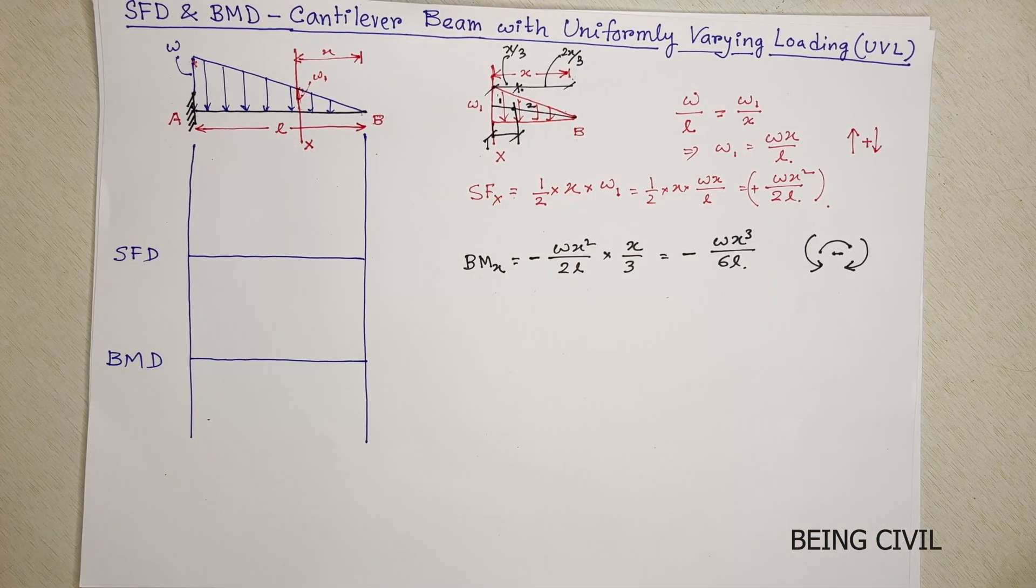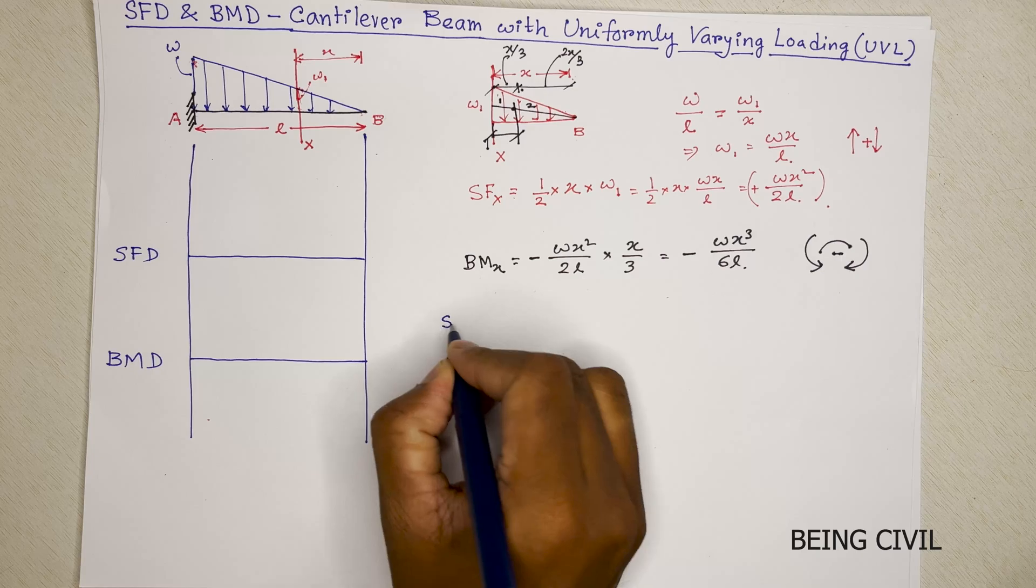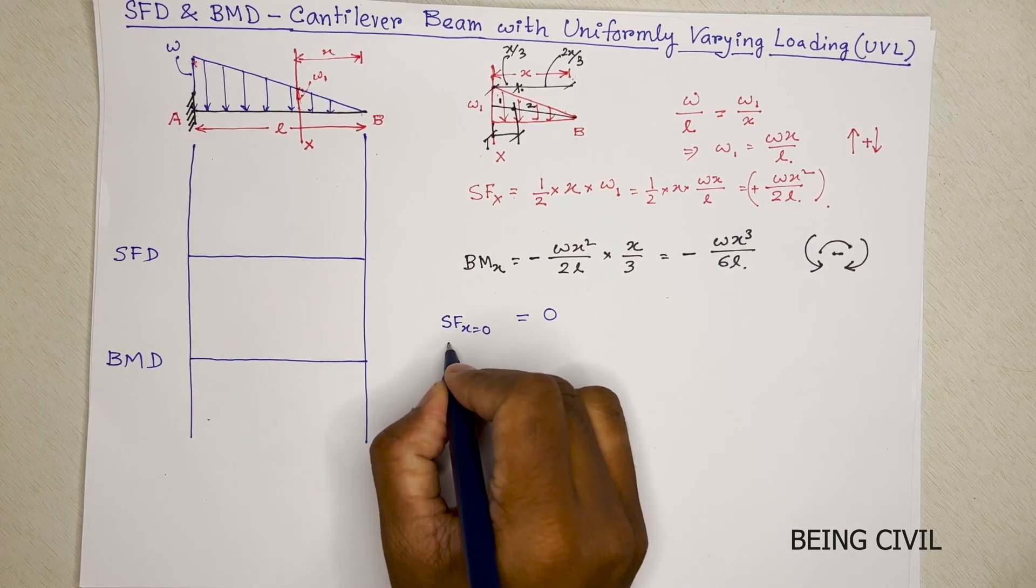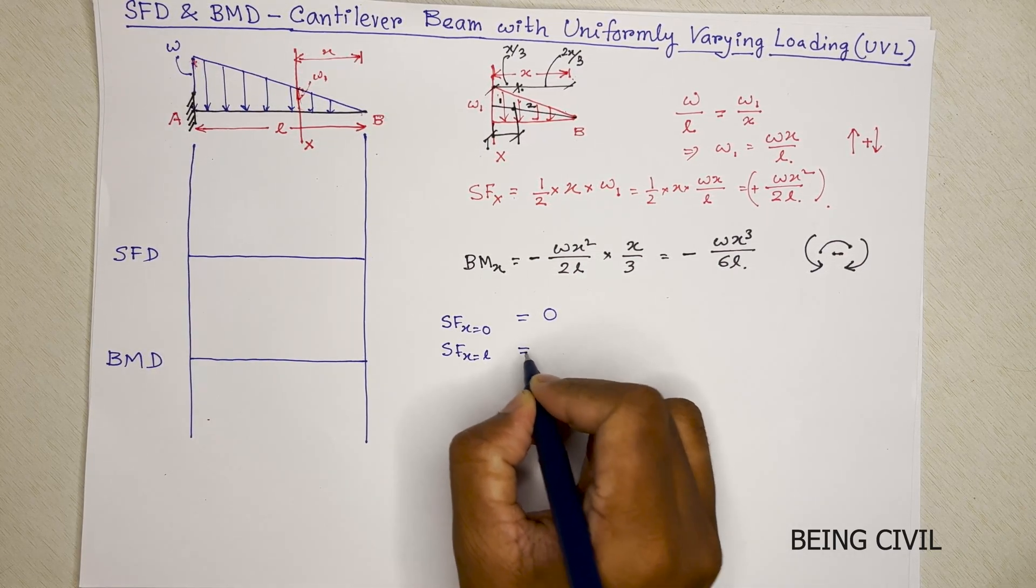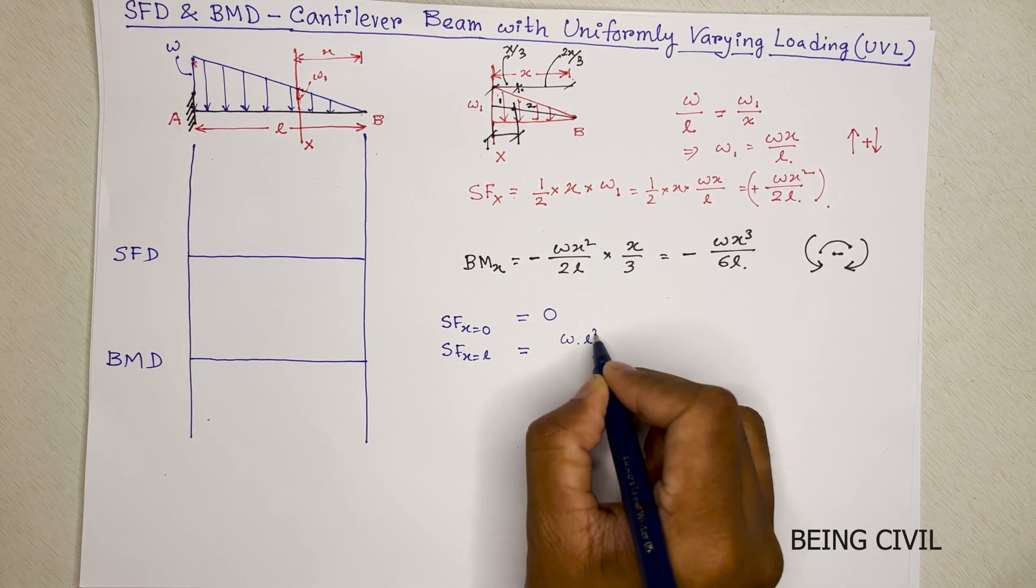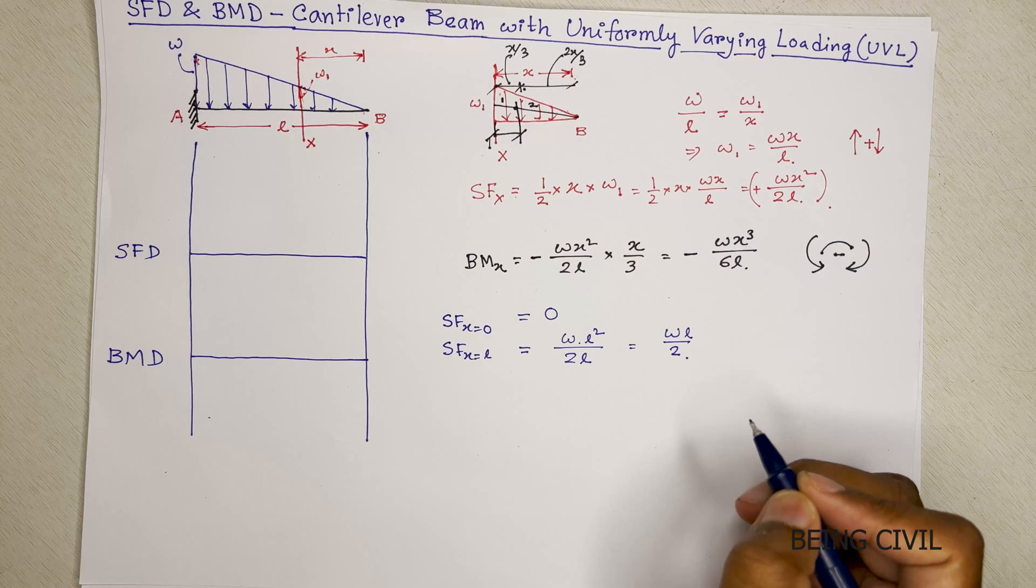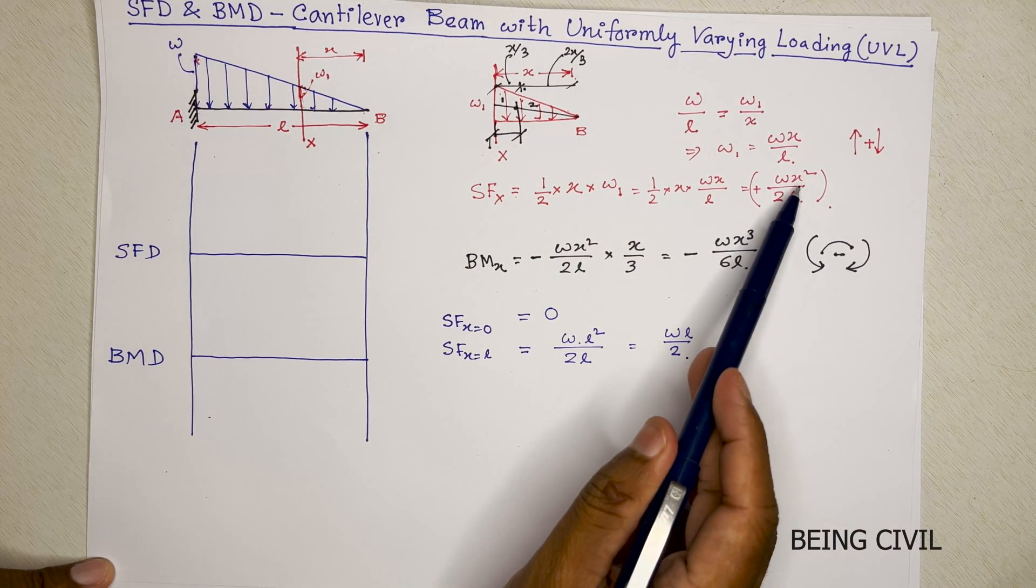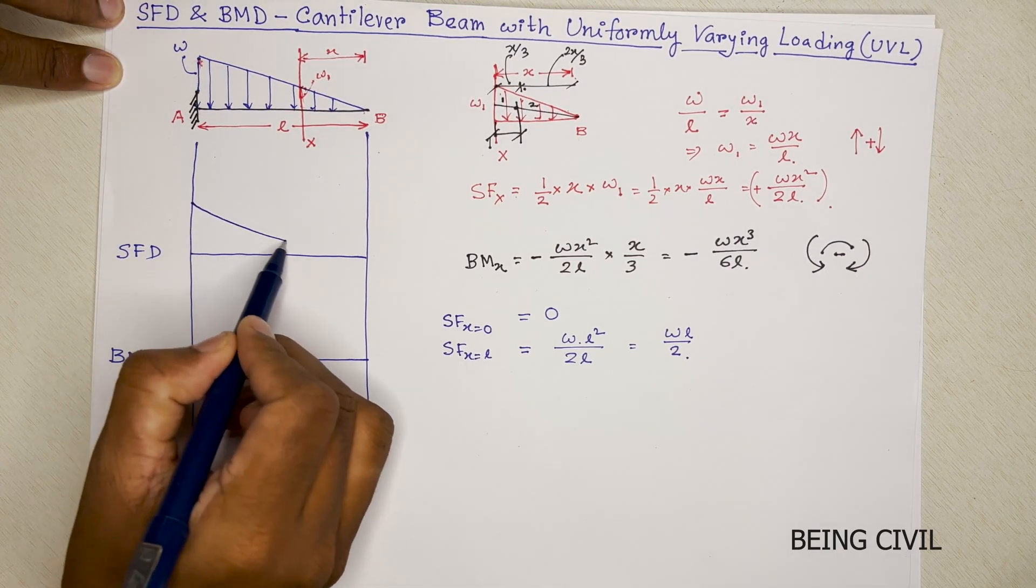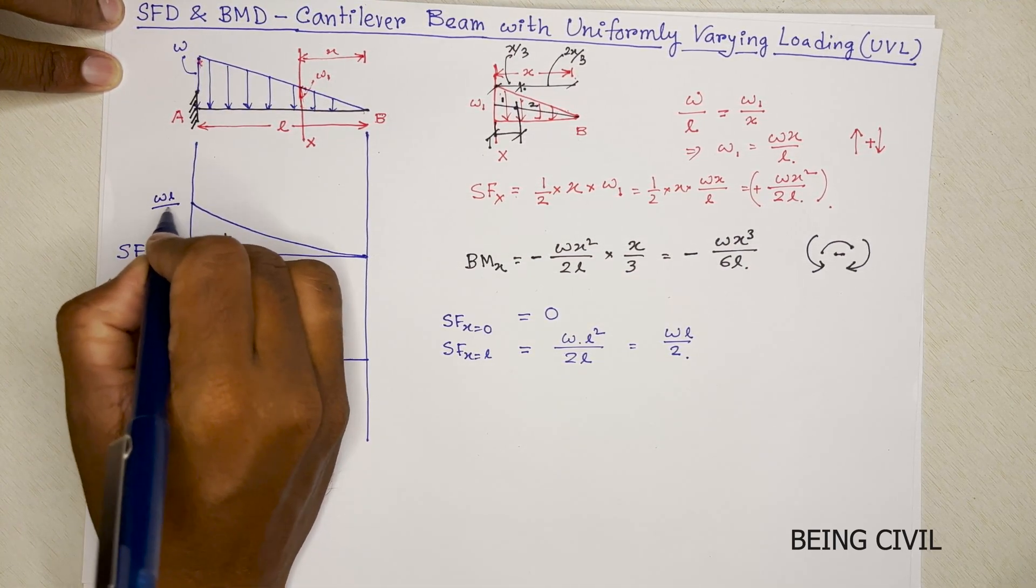So we got the shear force equation and bending moment equation. Now we have to calculate the shear force at x equal to 0 which will be equals to 0. And at x equal to L, that is the fixed end, it will be equal to WL square by 2L, so WL by 2. You see, this equation varies with x square, so this will be a parabolic curve. And this is positive shear force. This is WL by 2.